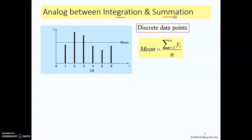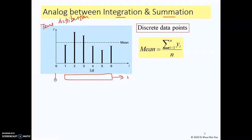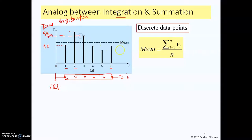Integration has an analogy with summation. For example, consider a plate with different temperature distribution. You measure the dimensions of the plate from a reference point — first point at one unit, second at two units, third, fourth, fifth, and the last point, giving six points total. You then measure the temperature at each point: the first gives around 50 degrees, the second around 90 degrees, 80 for the third, and so on, obtaining six temperatures at six locations.